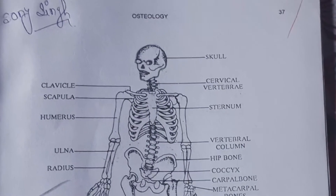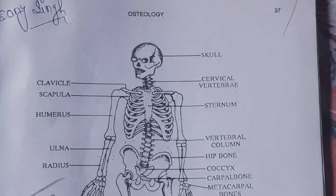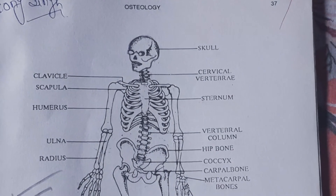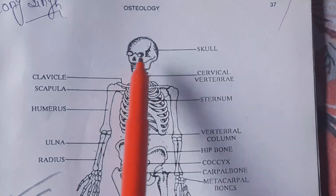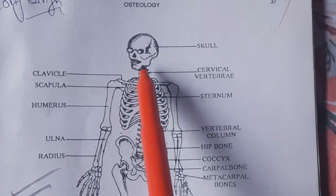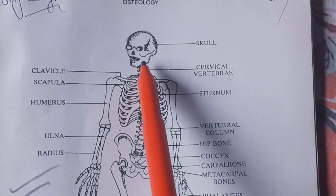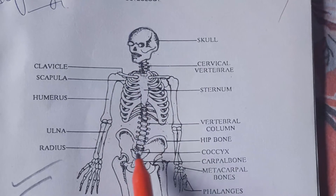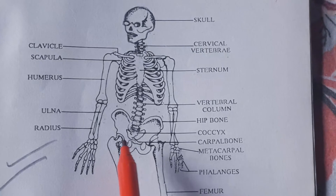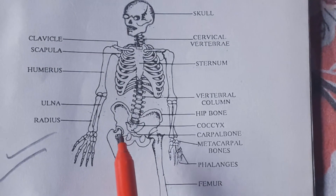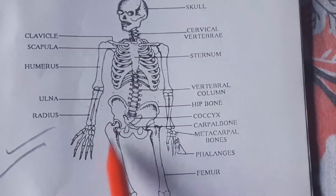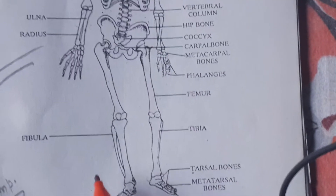There are two types of human skeleton: axial and appendicular. The head and trunk portion belongs to the axial skeleton. The appendicular skeleton includes the limbs — the hand area and the leg area.